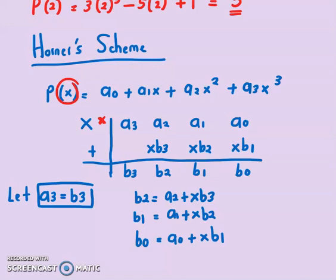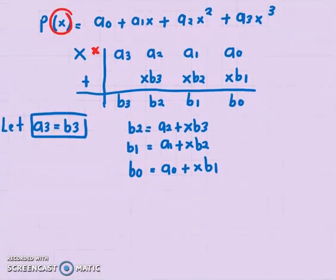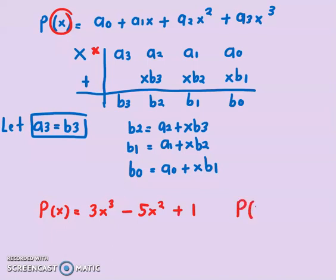Is it too complicated for you? Let's look at one example. The same example that I've shown earlier on. So we have P(x) = 3x³ - 5x² + 1, and you want to find the value for P(2).